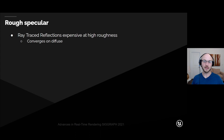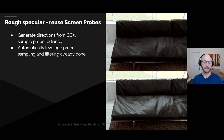We can also do something for rough specular. Ray trace reflections become very expensive at high roughness because they require tracing additional rays. At high roughness, the GGX lobe converges on diffuse — it becomes very wide. So instead of tracing additional rays for high roughness materials, we reuse our screen-space radiance cache. We generate directions from importance sampling the GGX lobe, and then instead of tracing new rays, we just sample our screen-space radiance cache, automatically leveraging all the sampling and filtering work we already did.